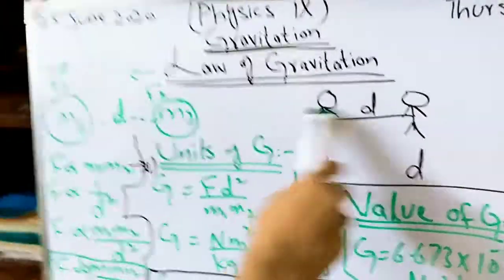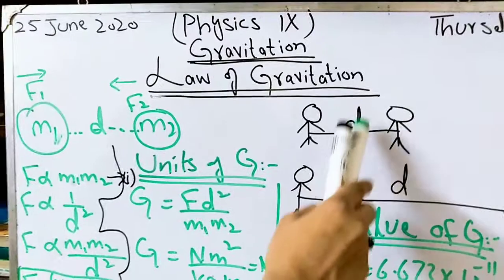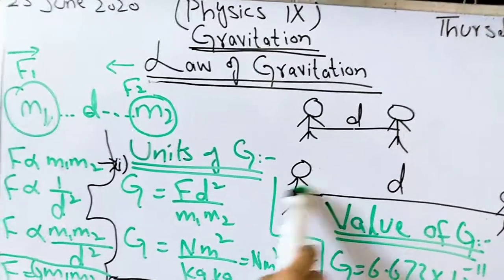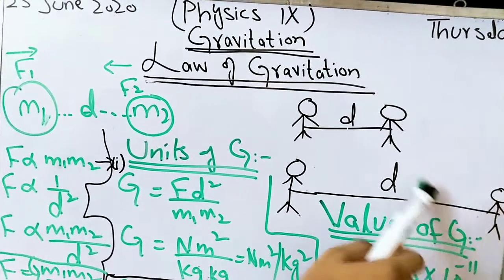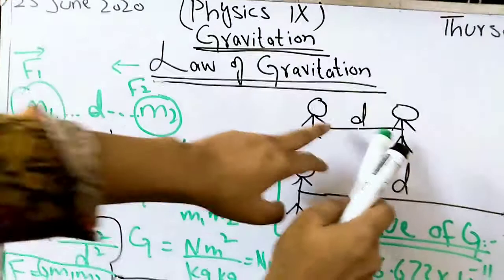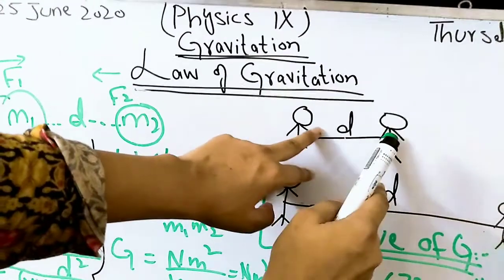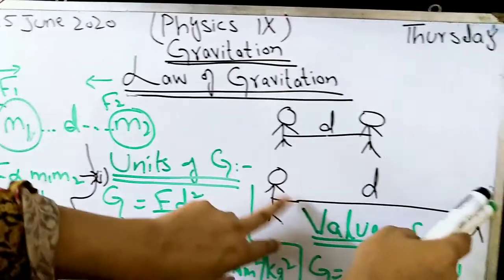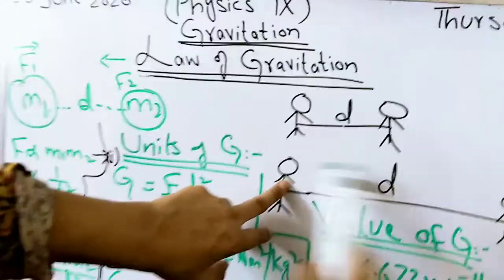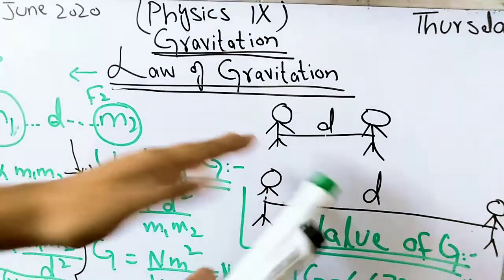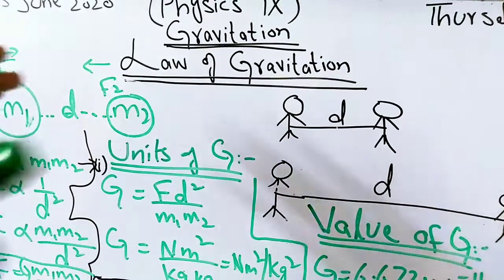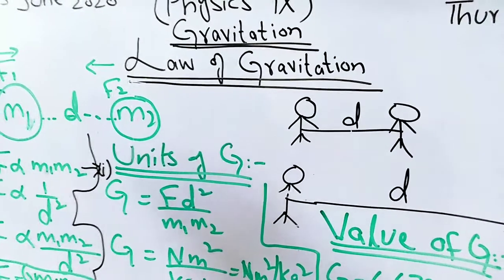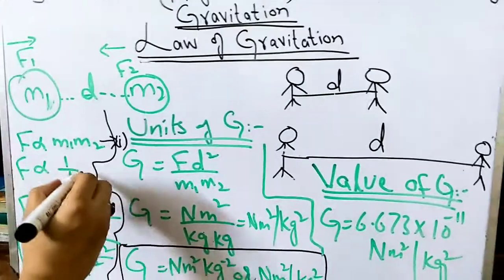Now, the second part concerns the distance. Suppose we have two bodies separated by distance D. If we increase the distance, what happens? If the distance is less, the force of attraction between the two bodies is greater. If we increase the distance, the force of attraction decreases. So when distance increases, force reduces, and when distance decreases, force increases. This means the force undergoes an inverse relation with the square of the distance between the two bodies. This is equation two.